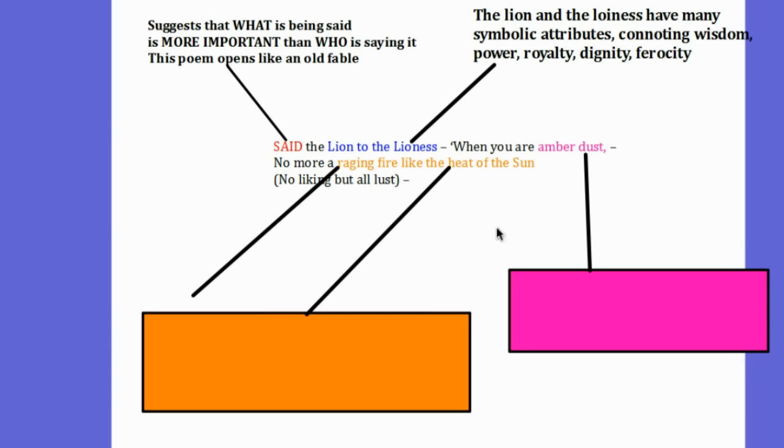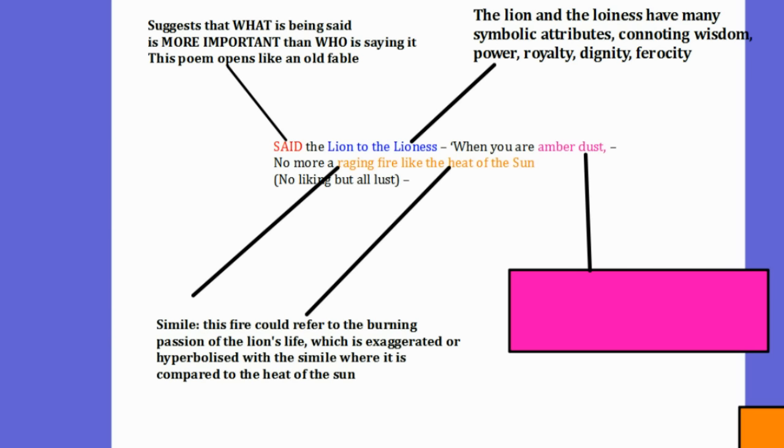Then we have this phrase raging fire like the heat of the sun. Now this phrase contains a simile and this fire could refer to the burning passion of the lion's life, which is exaggerated or hyperbolised with the simile where it is compared to the heat of the sun.